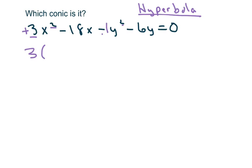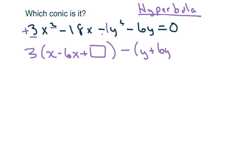What I'm going to do is factor out a 3. You're going to get x² − 6x, and I'll put a box for the completing-the-square term. Be careful with the next step: for y we have plus 6y. Because there's a negative sign in front of the parentheses, you have to change that to a positive — negative times a positive is a negative. Put your box here, equals 0.